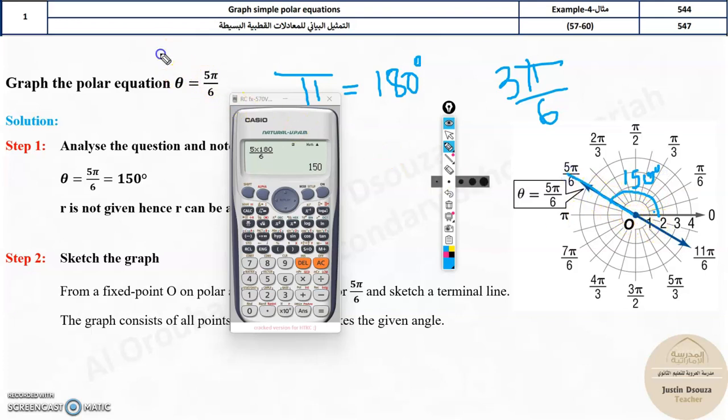Here R value is not given. R is not there. So it can be minus also. It can be negative R. R can be or negative R. So you take it in the opposite direction as well. Both the sides. You draw a straight line. That is it. So now here you can see 150 degrees, straight line, and opposite side as well.